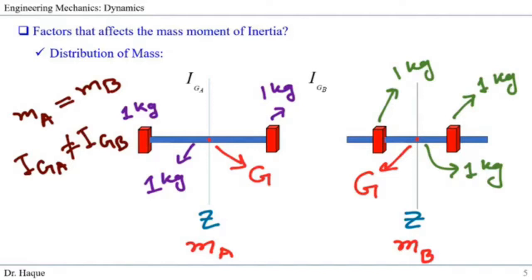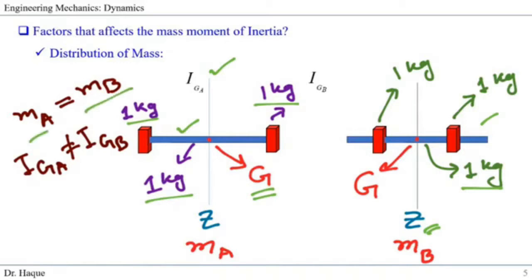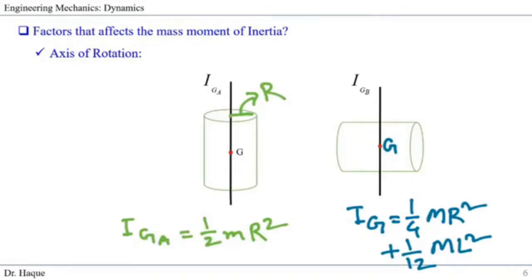The second factor is distribution of mass. What if the masses of the bodies are the same but the mass is distributed differently? For example, we have the same rod with one-kilogram weights on both sides — three kilograms total — rotating about the mass center G. In the second case we also have the same total mass and the same rotation axis through G, but the weights are placed at different positions. So the mass moment of inertia will not be the same because the distribution location of the masses affects r.